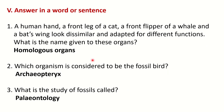Roman V: Answer in a word or sentence. First question — a human hand, a front leg of a cat, a front flipper of a whale, and a bat's wing look dissimilar and are adapted for different functions. What is the name given to these organs? The answer is homologous organs.